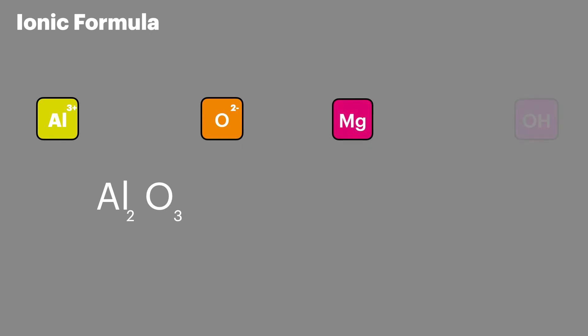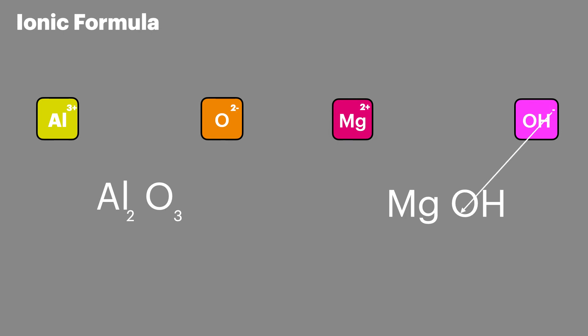In a slightly different example, we're going to look at the polyatomic ion hydroxide forming an ionic bond with magnesium. Magnesium has a 2+ charge and hydroxide has a 1- charge. We know the final formula will have both Mg and OH in it. Using the crossover method, we take the 1 from hydroxide and give 1 magnesium, then take the 2 from magnesium and give 2 hydroxide ions. Because there's more than one atom in the hydroxide ion we put brackets around it, and as there's only one magnesium atom we remove that number 1, giving a final formula of Mg(OH)2.